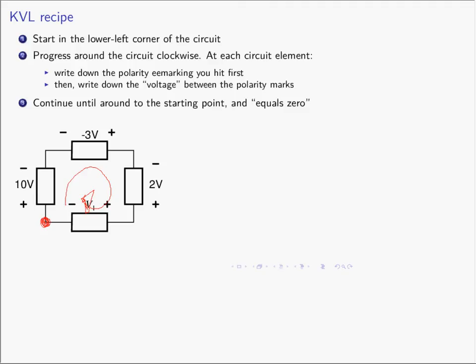Now as you go around in a clockwise fashion, at each circuit element you're going to do two small steps. First, you're going to write down the polarity symbol that you come across first. So in this particular example, going around clockwise, the first circuit element I come to is this 10-volt voltage source. What is the polarity marking I hit first? Well, the polarity marking I'm hitting first is the plus sign, so I will write down plus.